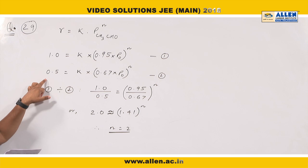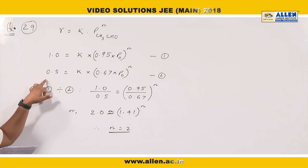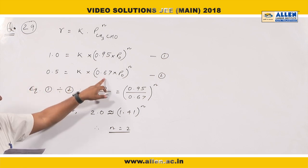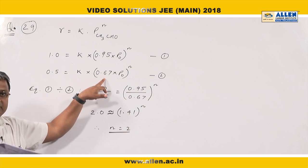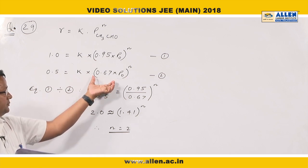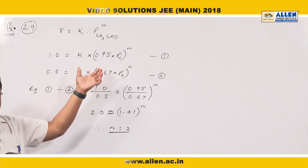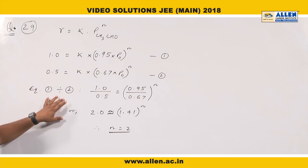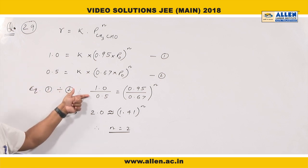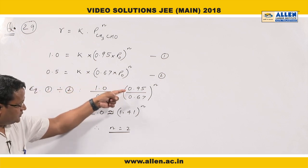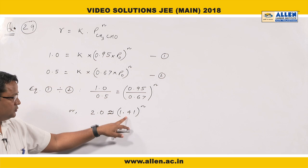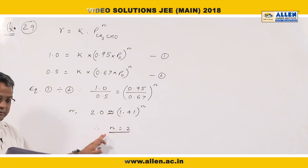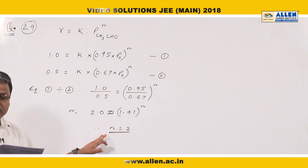For the second data point, the rate is 0.5 torr per second, and 33 percent is reacted, meaning 67 percent of the initial pressure of acetaldehyde remains. On dividing these two equations, we get a ratio that is almost equal to root 2. Hence, the correct order of the reaction is 2.